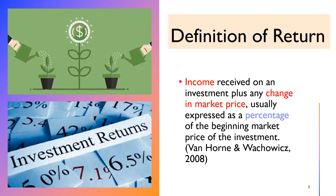Examples of income are dividend from common stock, coupon interest from bond, and rental from property investment. Change in market price can be positive or negative, depending on whether the market price has increased or decreased from its initial value. Return is usually expressed as a percentage of the beginning market price of the investment.